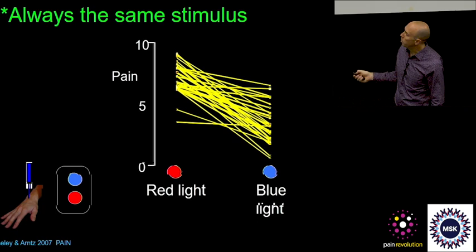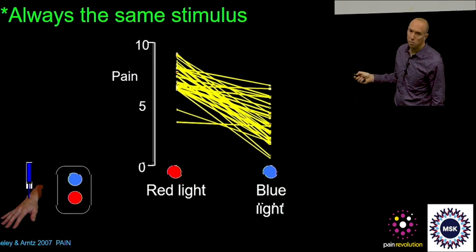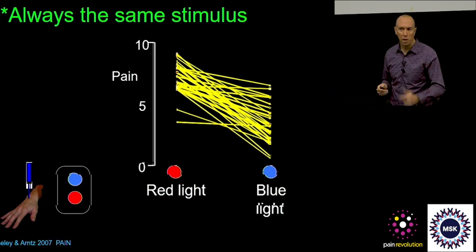And the fact that all of these lines, not all of them, most of them tend to go up in that direction, tells us that for nearly all of these supposedly normal people, the same stimulus with a red light hurts more than it does with a blue light because of the meaning. We've changed meaning.